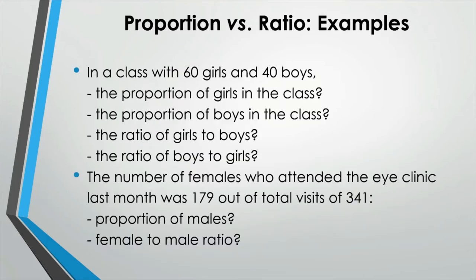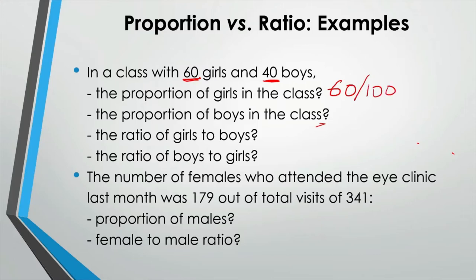To make sure we know how to calculate each of these quantities, let's go over some simple calculation examples. In a class with 60 girls and 40 boys, what is the proportion of girls and boys, or the ratio of girls to boys? The numbers here are given as counts — 60 and 40 — which are basically the absolute frequency. The proportion of girls in the class is the number of girls over the total size of the class, which is 100. So that is 0.6 or 60%.